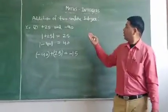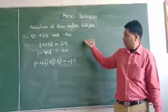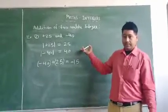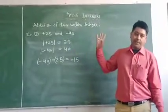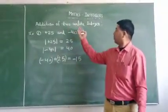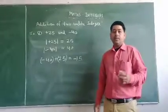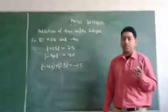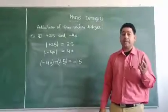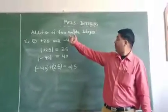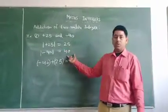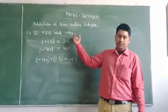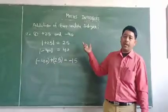Students, I hope you are clear on both addition of like as well as unlike integers. Please make a lot of practice. To recap: in like integers, we add their absolute values and prefix the same sign — if both positive, put positive; if both negative, put negative. For unlike integers, we check absolute values and subtract the smaller from the larger, then prefix the sign of the greater integer.